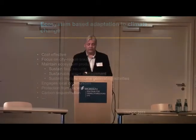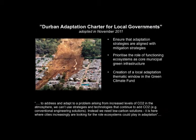This was fortified in the Durban Adaptation Charter for local governments, adopted in November 2011. Three important pillars include: ensuring adaptation strategies are aligned with mitigation strategies; prioritizing functioning ecosystems as core municipal green infrastructure; and creating a local adaptation thematic window in the green climate fund. As one observer noted, to adapt to problems arising from increased CO2, we cannot use strategies that continue to add CO2 — we need low-carbon solutions, which is why cities increasingly look to ecosystems for adaptation.